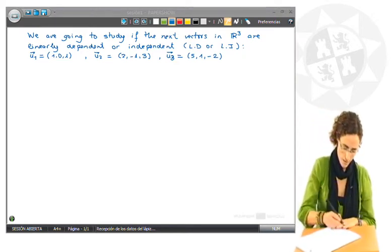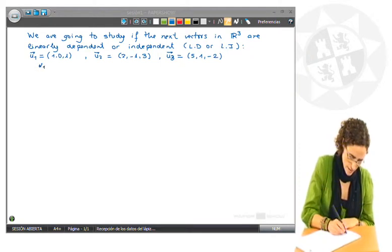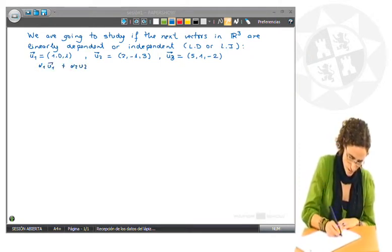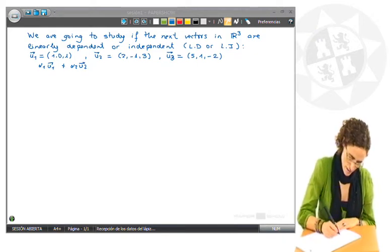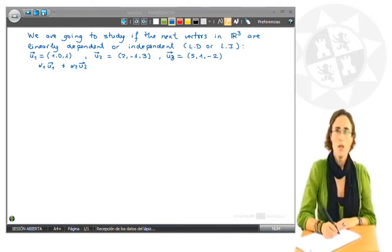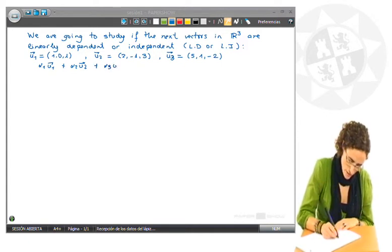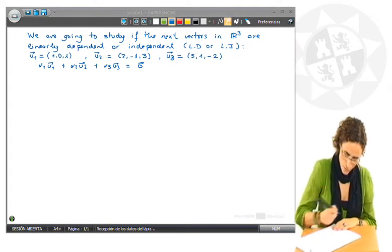To know it we must write a linear combination of the vectors: α1 by U1, α2 by U2, and α3 by U3, and make this equal the null vector.